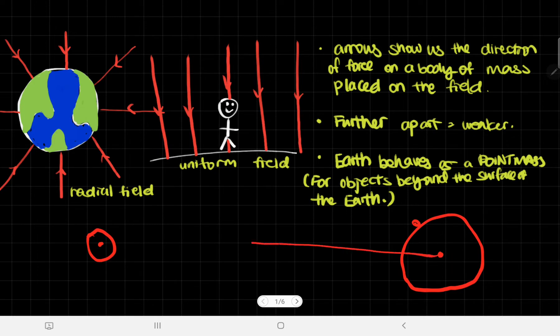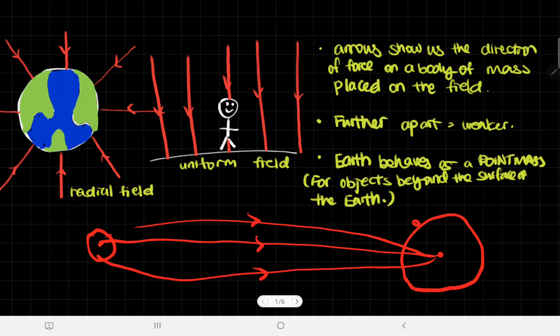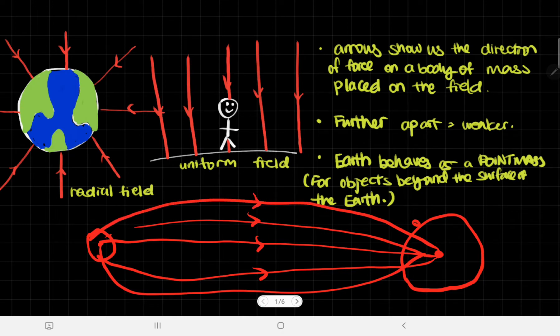If we were to draw field lines like this, obviously it would be going into Earth because the moon is attracted to the Earth. Notice how we were drawing them from the center point of the Earth. That is because Earth is behaving as a point mass for objects beyond the surface of the Earth. And for objects on it, we can literally just treat it as a uniform field.